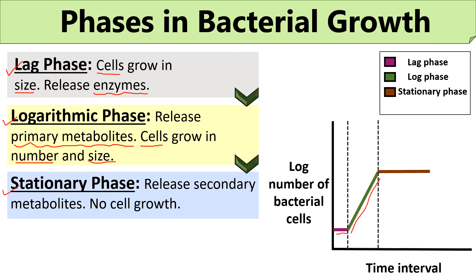The stationary phase is the stagnant growth phase of bacteria in which the population size is in an equilibrium state — meaning the number of cells produced will be equal to the number of cells dying. Therefore, during the stationary phase, there will be no increase in cell number or cell mass. This is due to limited nutrients, low oxygen, accumulation of toxic waste, and an acidic pH of the growth medium. In the standard growth curve, the stationary phase is represented by a straight line.